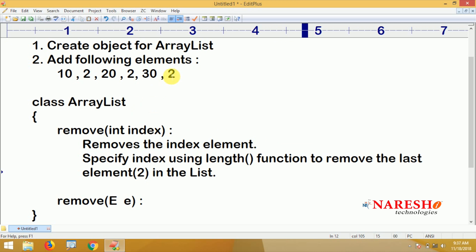Remove this last element by specifying the index. How to get that index? Length function always returns the size. How many elements are present in the ArrayList it will return. With the help of length function you should specify and remove.